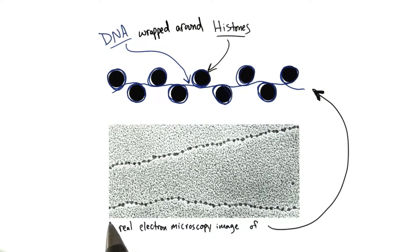And down here in the actual real life picture, you can see the little circular histone proteins. And they're connected by a string in between them because the DNA is wrapped around them, and then onto the next histone, and onto the next one, and onto the next one.